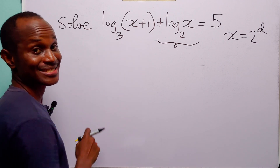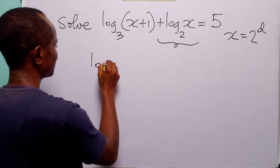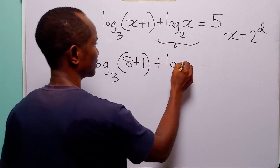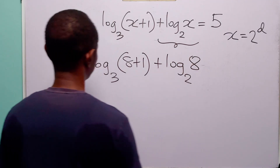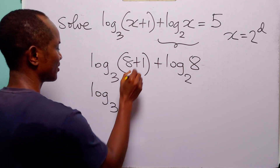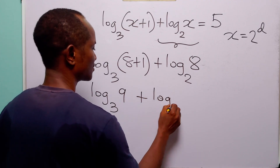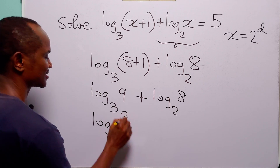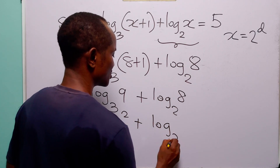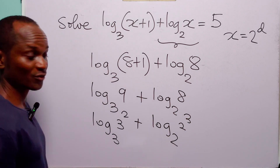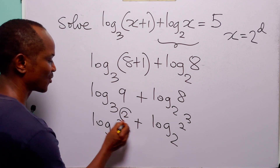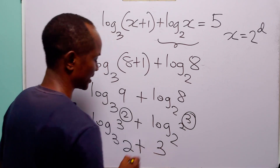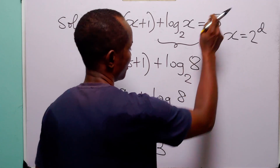When we substitute x equal to 8 into the equation, we have log to base 3 of 8 plus 1, plus log to base 2 of 8. This is log to base 3 of 9 plus log to base 2 of 8. Since 9 is 3 squared and 8 is 2 cubed, log to base 3 of 3 squared equals 2, and log to base 2 of 2 cubed equals 3. And 2 plus 3 is equal to 5.